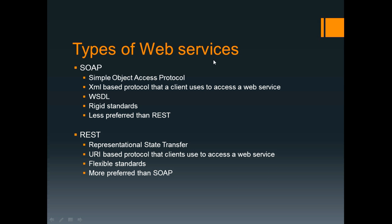There are two types of web services. We have a SOAP web service and a RESTful web service. A SOAP web service stands for Simple Object Access Protocol. It's an XML-based protocol that a client uses to access a web service. A SOAP web service also consists of a WSDL file, which is an XML file that consists of information about how to use a web service. It's basically the most important file you would use in order to call a SOAP web service, and it has very rigid standards.